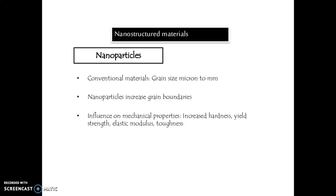The influence on the mechanical property is based on increasing hardness, yield strength, elastic modulus, and toughness. These properties increase when the mechanical property increases, and that is based on increasing the grain boundaries.